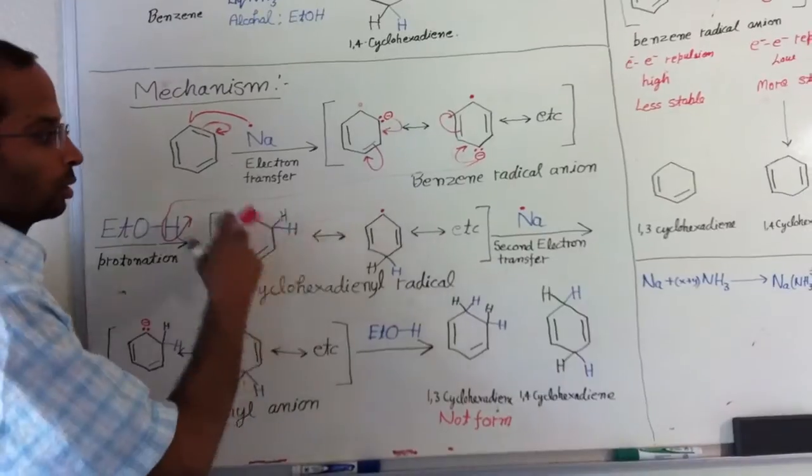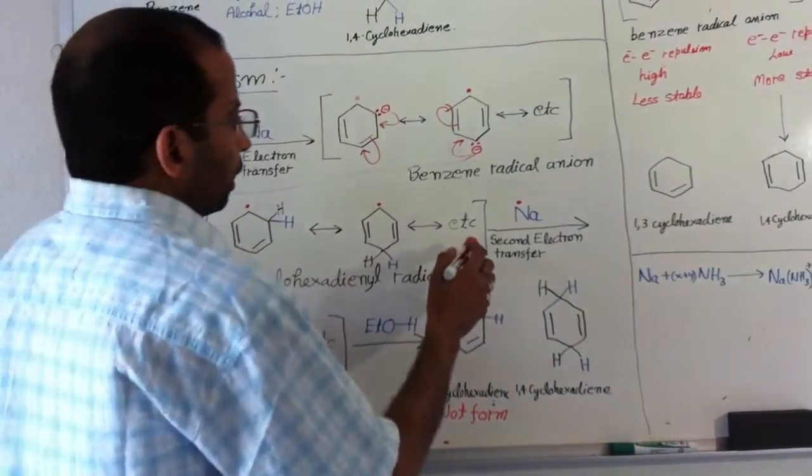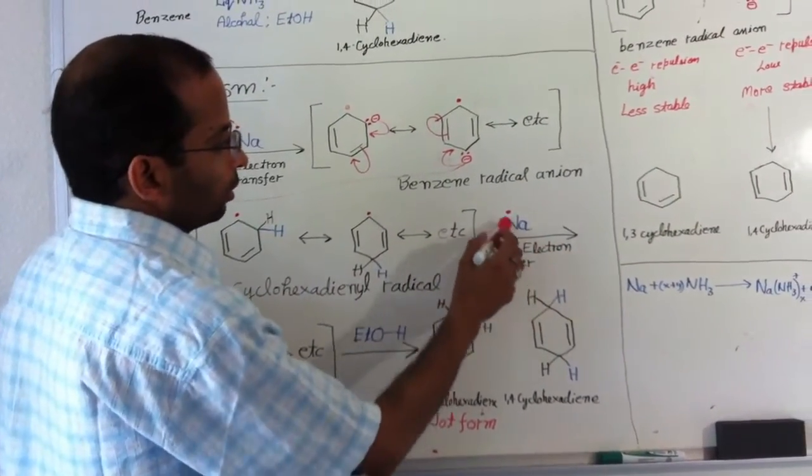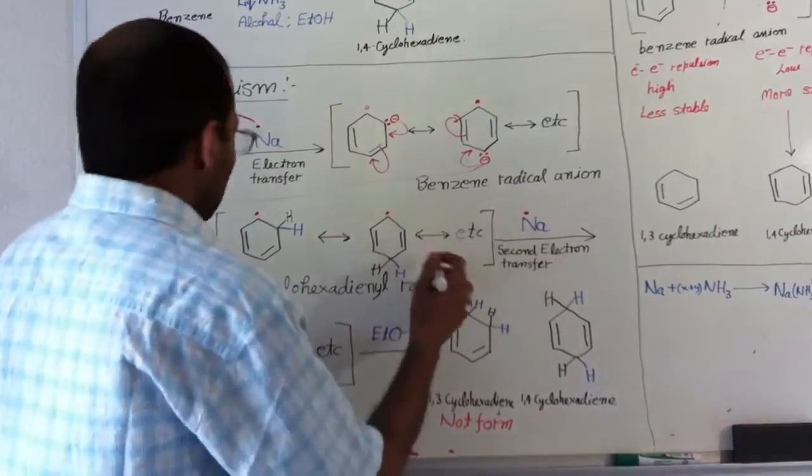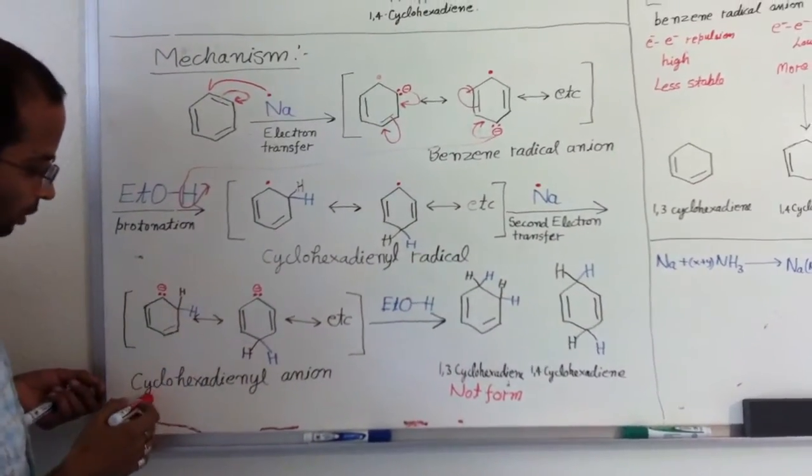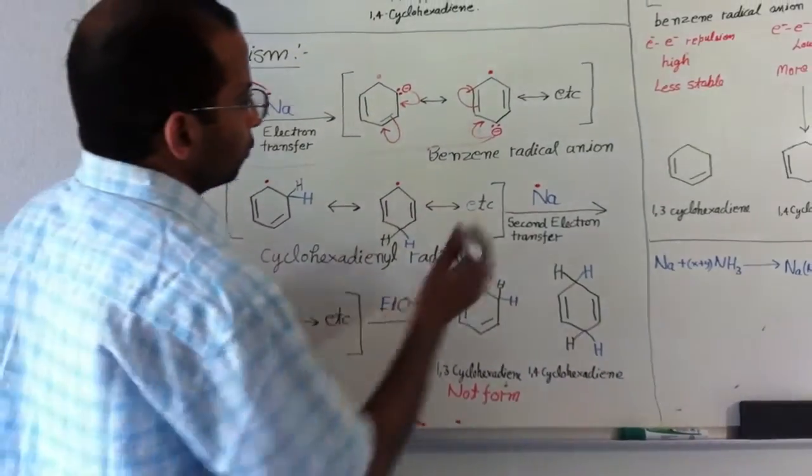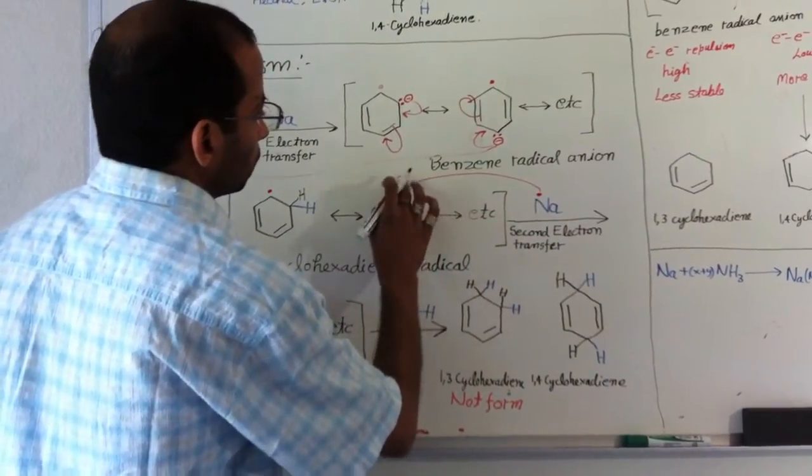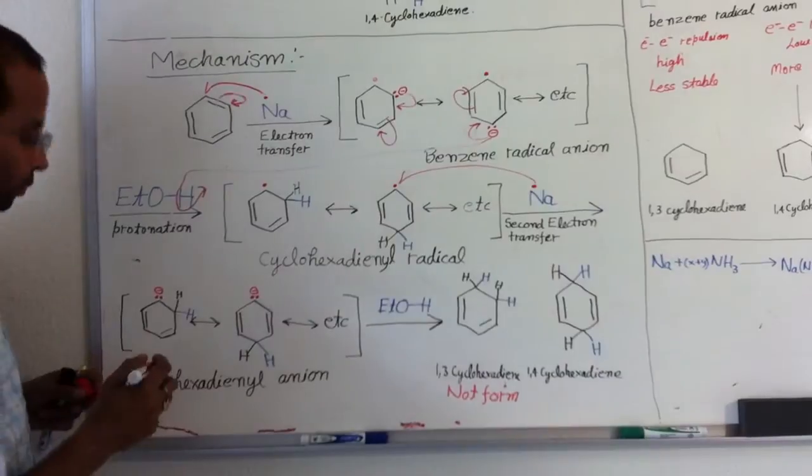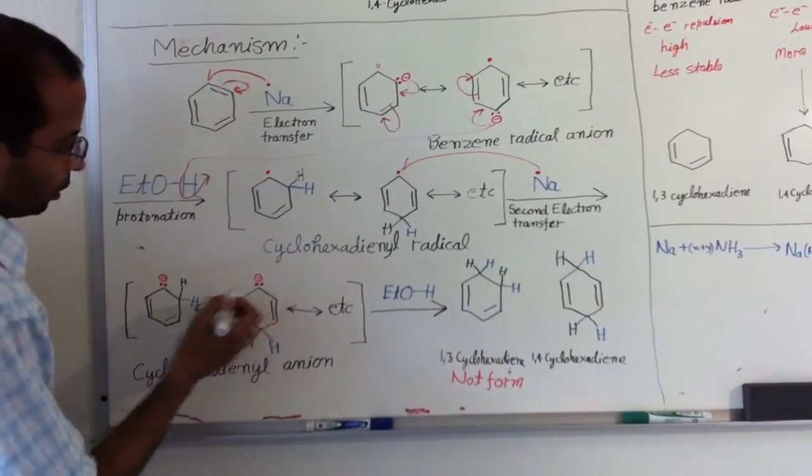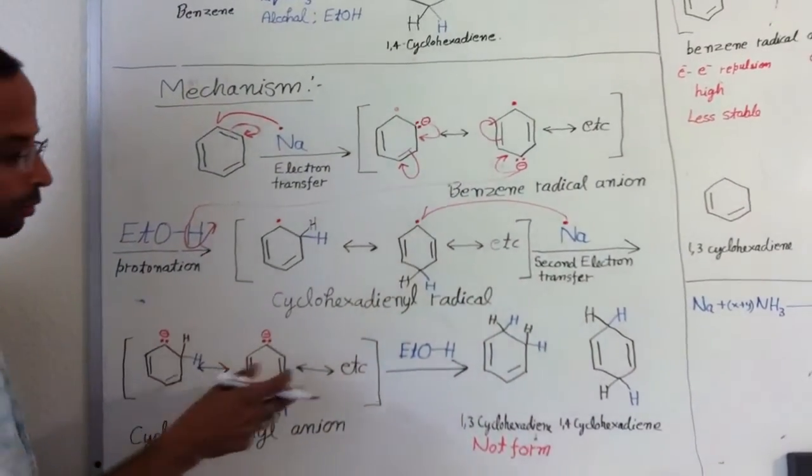So now it is only in radical form and these mesomeric structures are still delocalized because the radicals are moving to each carbon. The next step is a second electron transfer. Again, this radical is very unstable. It can absorb one more electron from sodium and generate cyclohexadienyl anions. Once this electron transfers, it should be only a fish arrow, meaning only one electron is transferring.